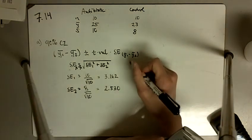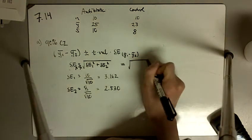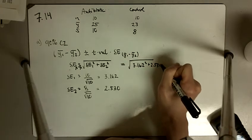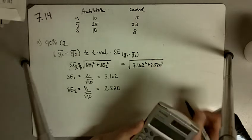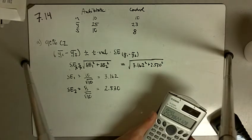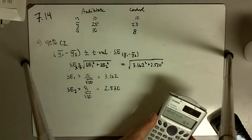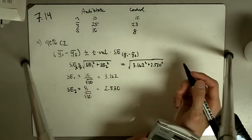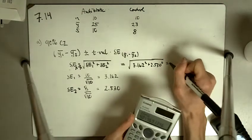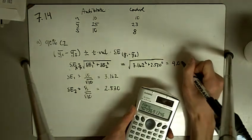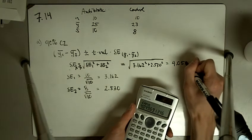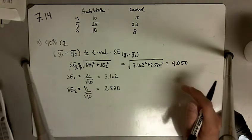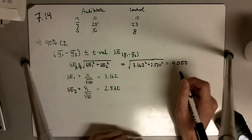The standard error of the difference is going to be the square root of those two terms combined. I get 4.049, or rounding off, 4.0497 — so 4.050. That's our standard error of the difference.